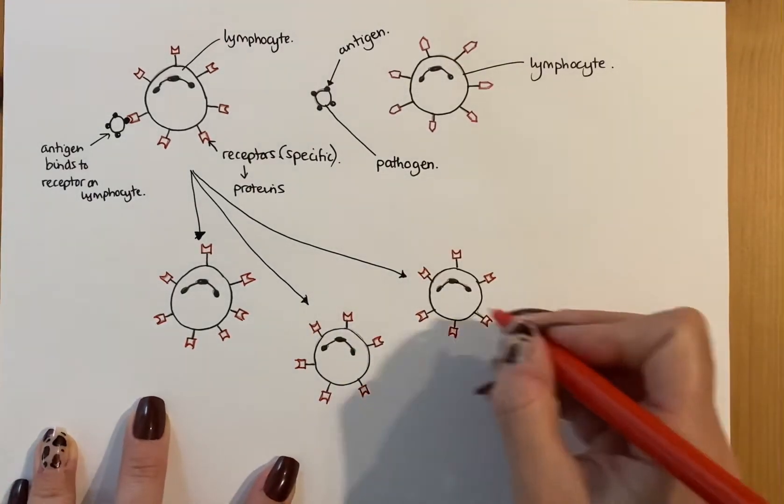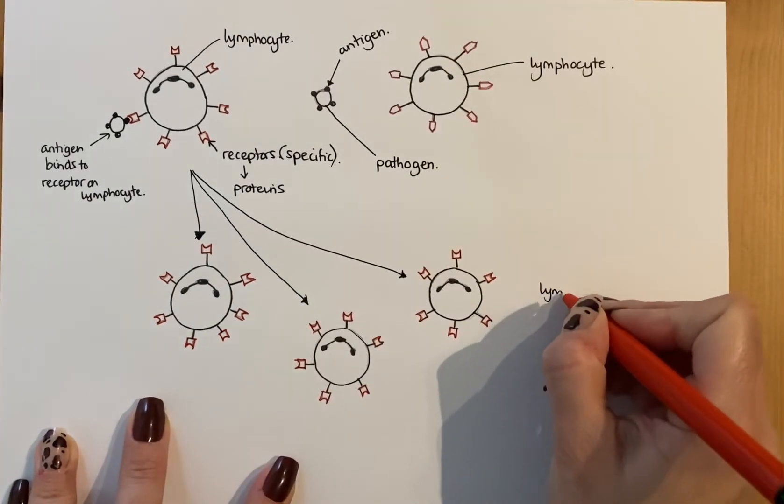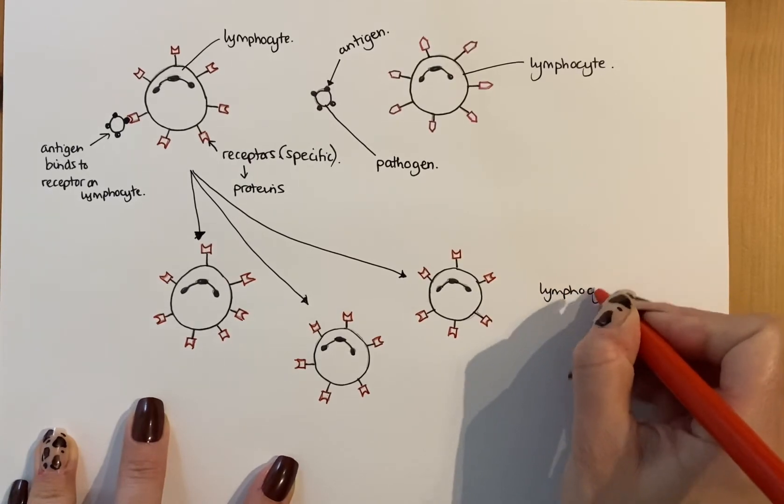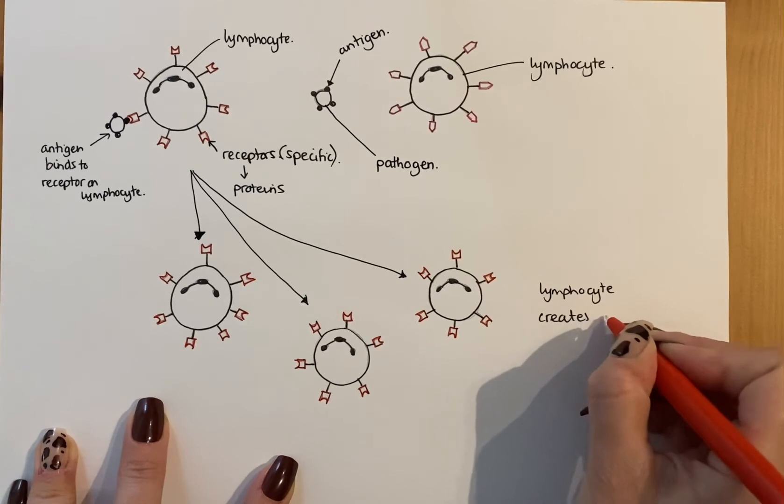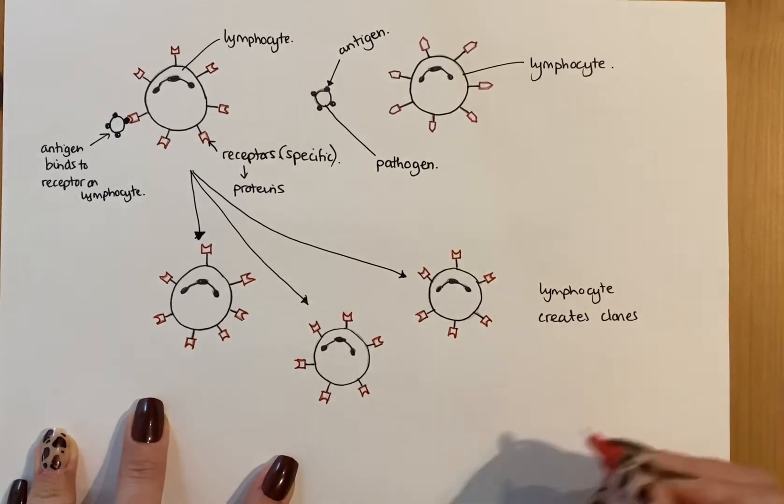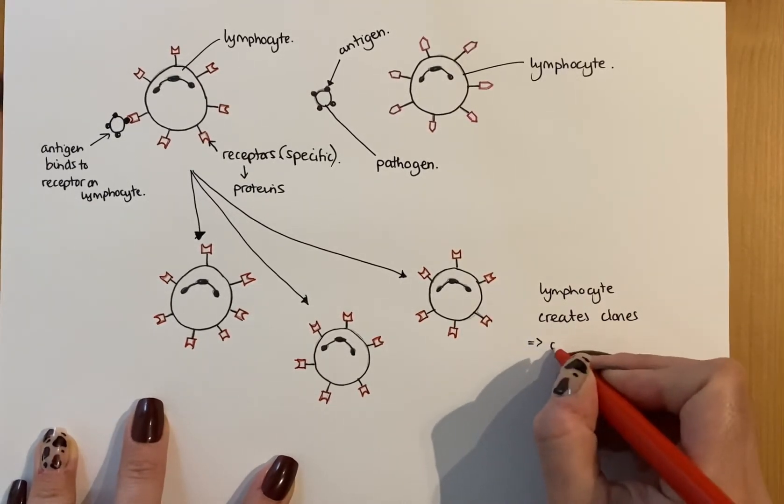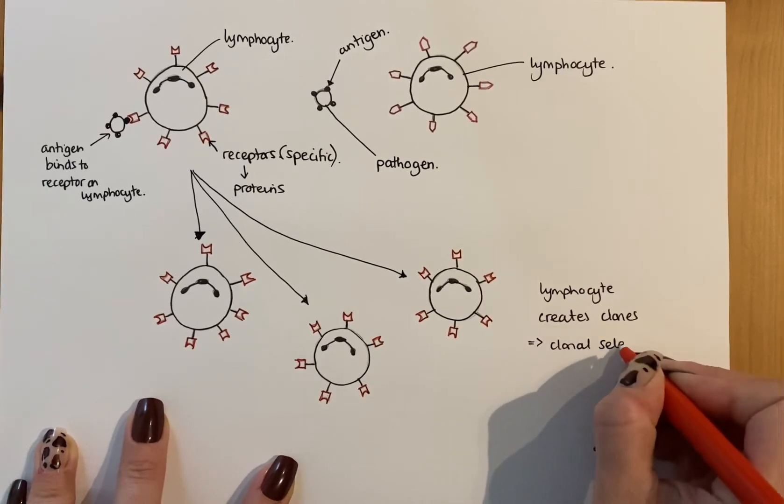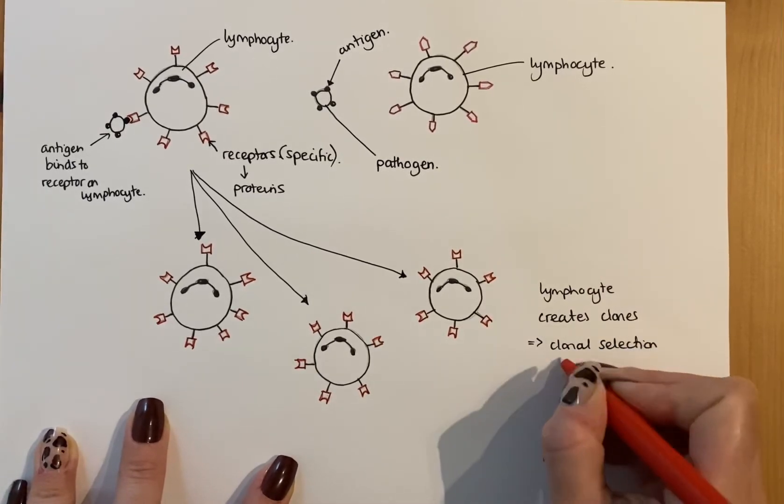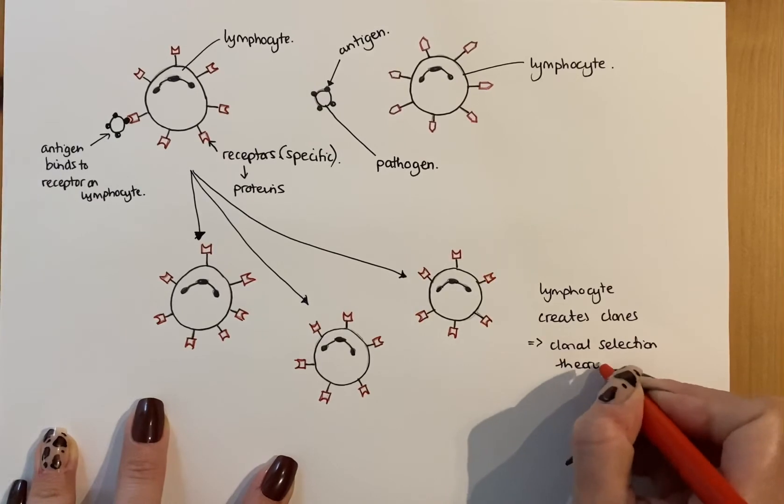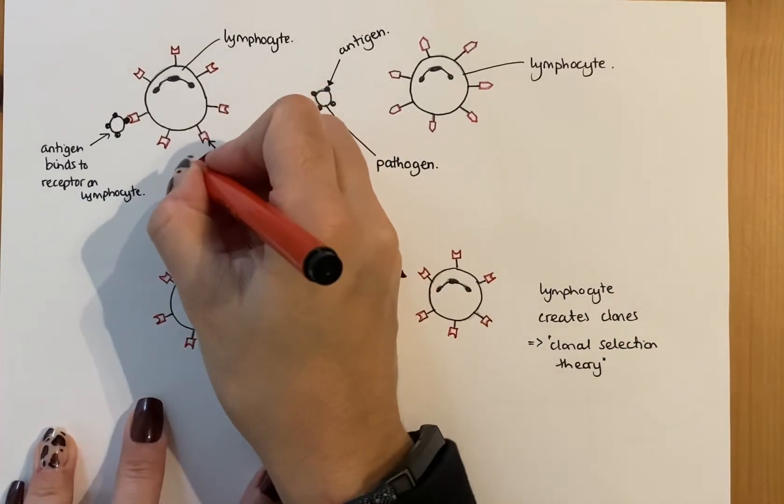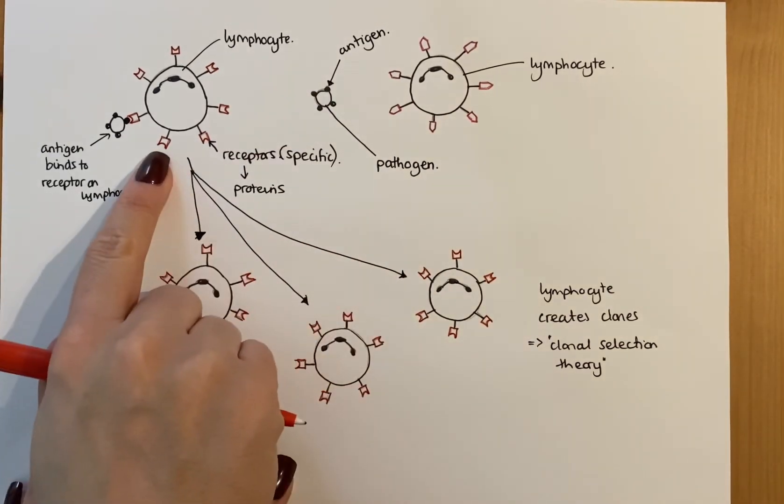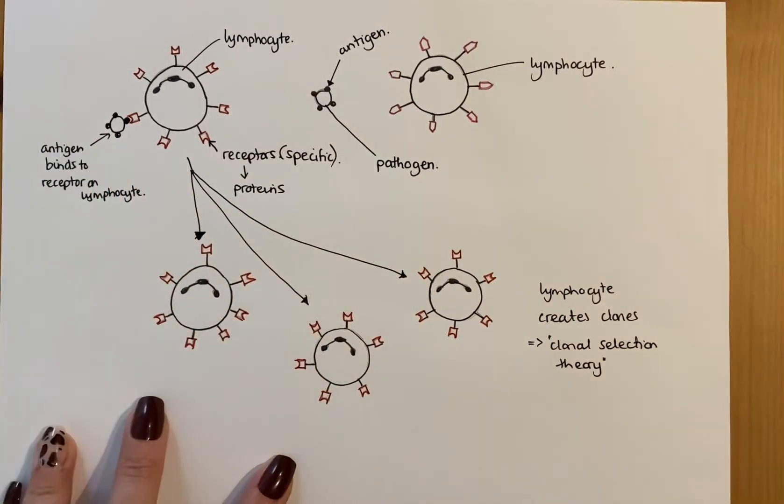So that lymphocyte creates clones. And this is known as the clonal selection theory. Selection because it selected the right type of white blood cell, the right type of lymphocyte that has receptors that matches those antigens. So they are specific.